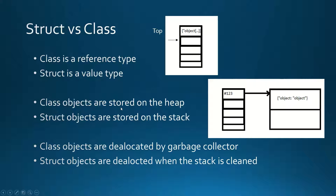Class objects are stored on the heap and struct objects are stored on the stack. Heap and stack are the memory regions. Stack is used for instant access — it is very fast — and heap is used for storing larger portions of data.